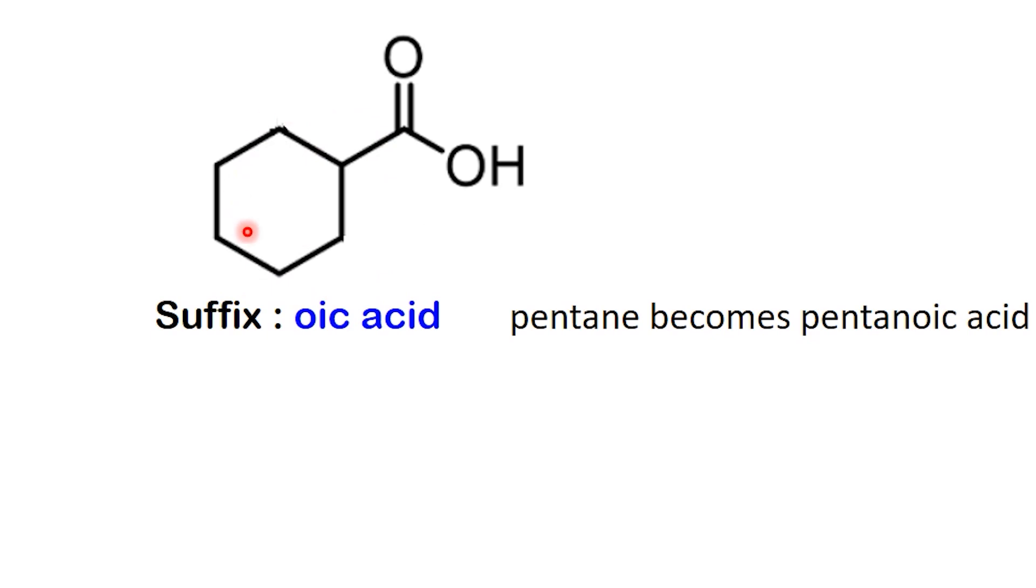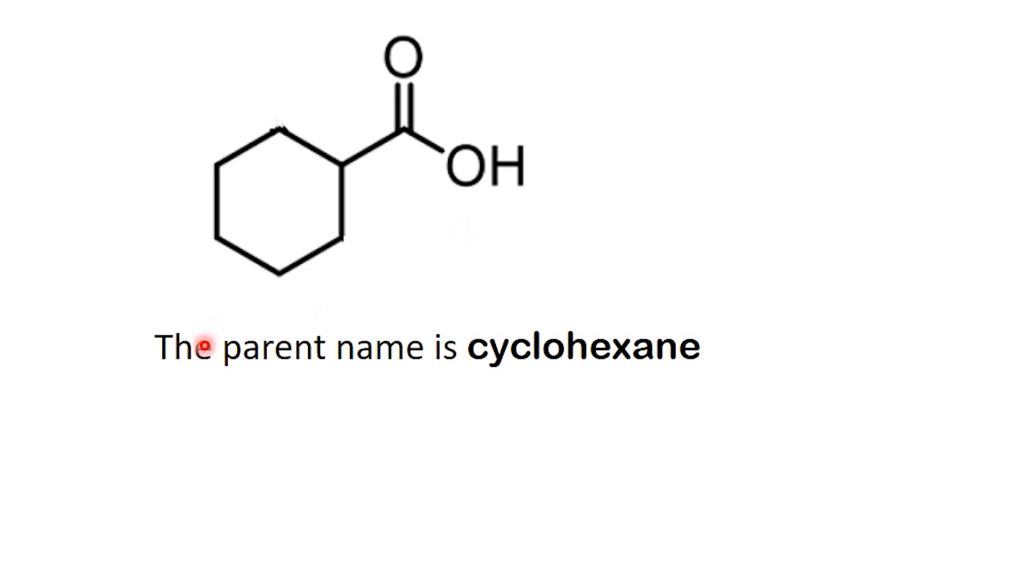But in cyclic compounds, the naming changes slightly. Here, the carboxyl group is attached directly to a six-membered ring. In this case, the entire ring is considered the parent. So the base name is cyclohexane.